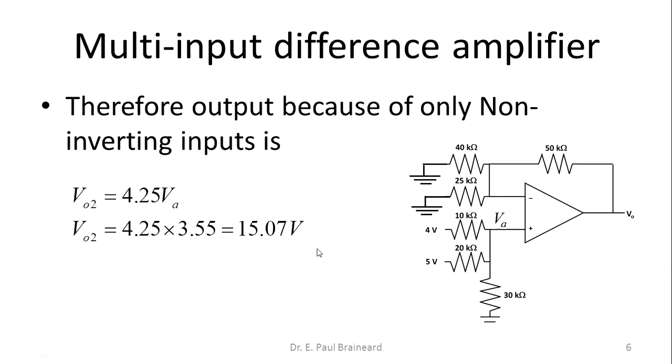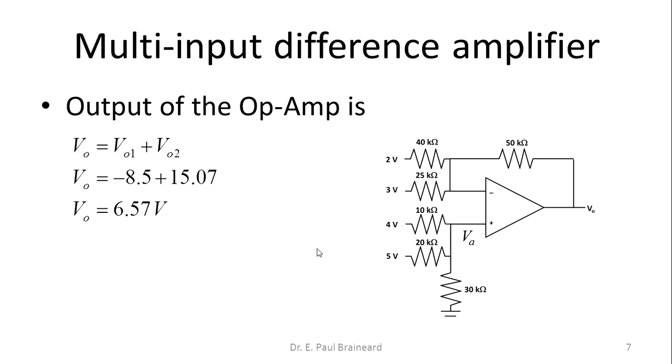Now we need to find out the output voltage of this particular difference amplifier which is having 2 inverting inputs and 2 non-inverting inputs. Therefore, V0 is given by V01 plus V02. Substitute these values, and you will get the output voltage to be equal to 6.57V.